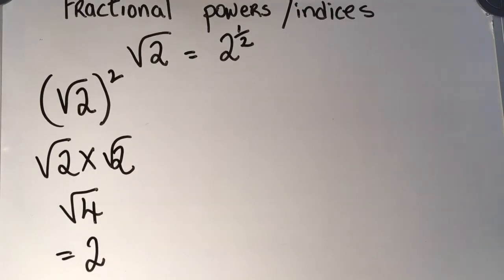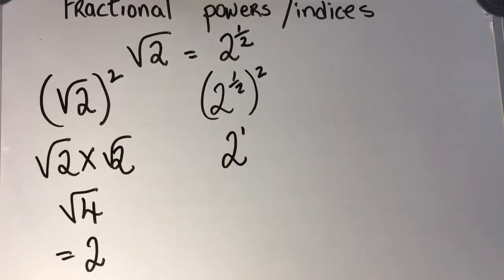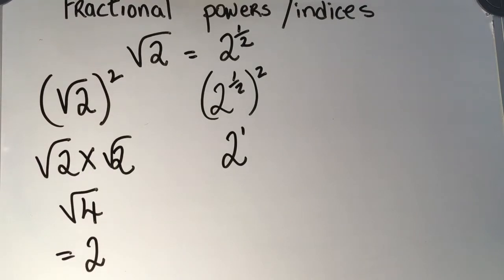Now let's look at the right-hand side: 2 to the power of 1 half, all to the power of 2. As we saw in a previous video, when you raise one power to another power, you multiply the indices. So 1 half multiplied by 2 is 1, giving 2 to the power of 1, which is 2. Therefore, the square root of 2 is equal to 2 to the power of 1 half.